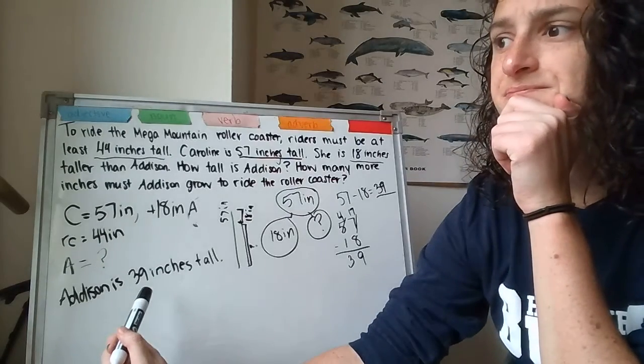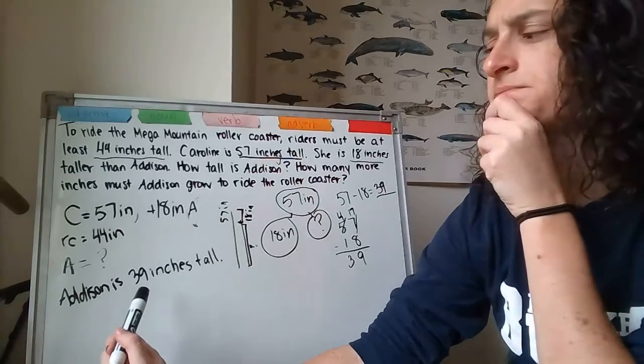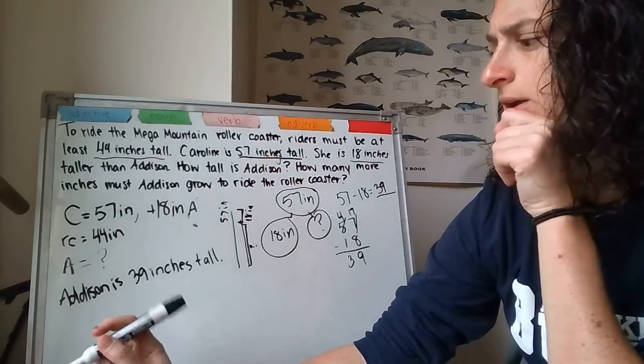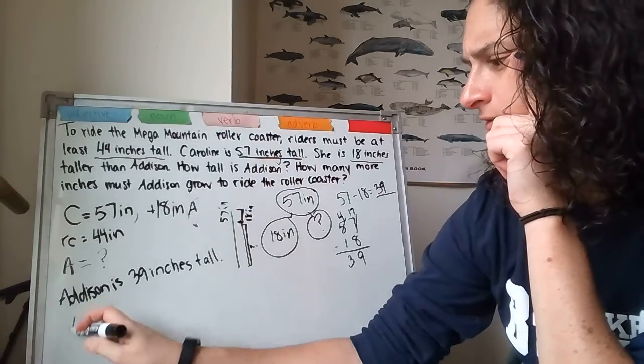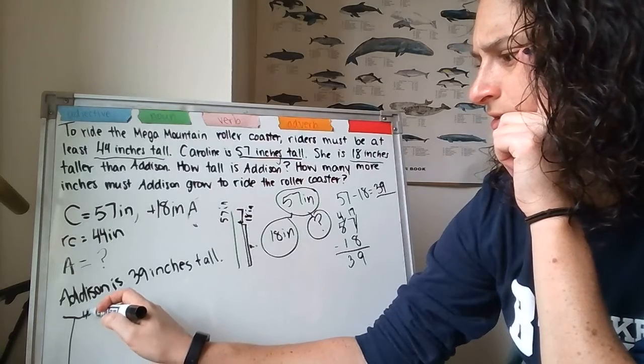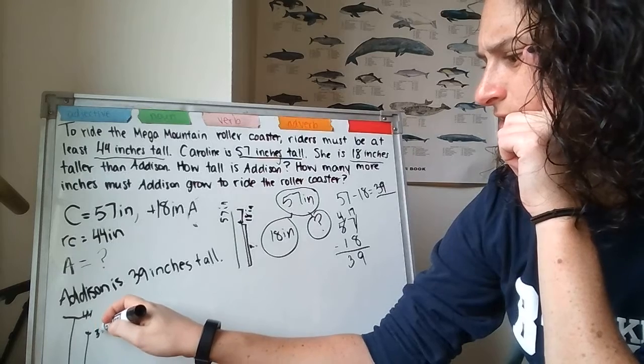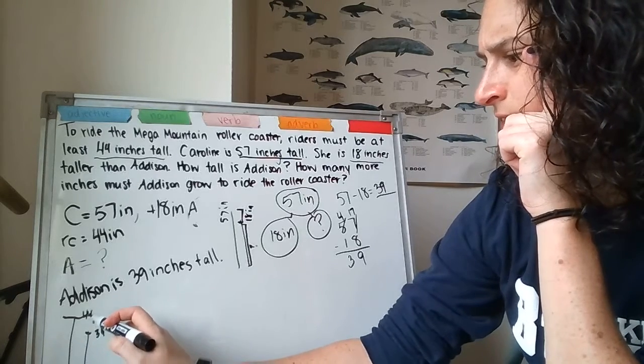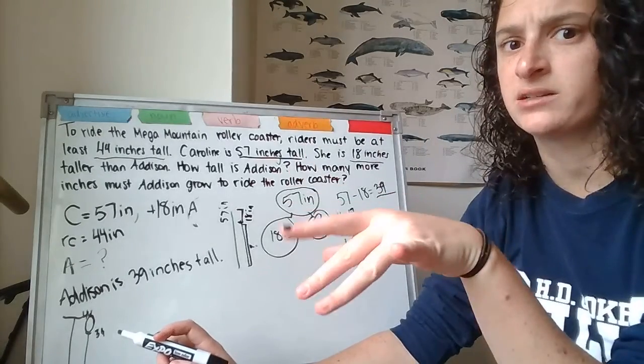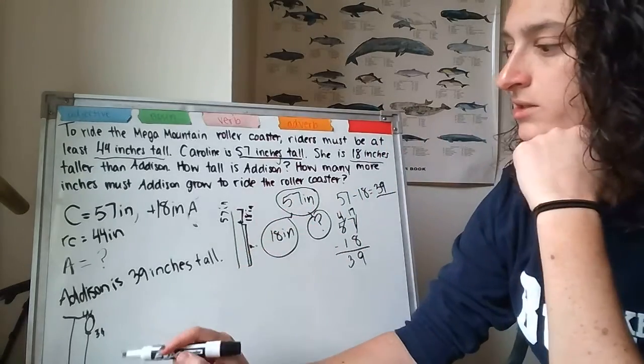Write down your equation and start solving. What equation do I want to use? I can draw it out again. 44 inches to ride the roller coaster. But Addison is 39 inches. Oh, that looks like I need another part. Okay. If you're not done writing down your equation and solving the problem, pause here. If you're done, let's check it together.